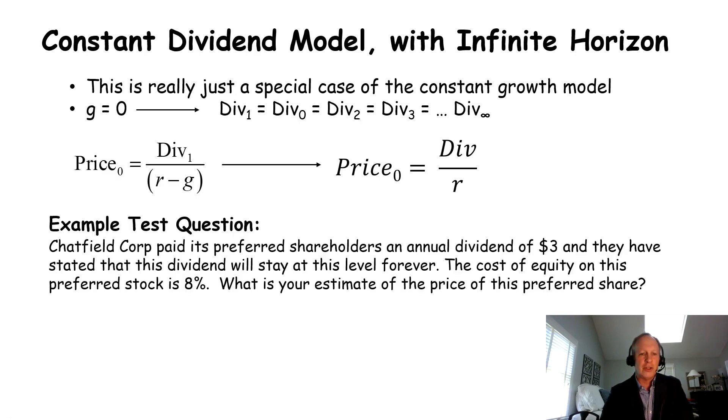Now, so here's the question. Chatfield Corp. paid its preferred shareholders an annual dividend of $3, and they have stated that this dividend will stay at this level forever. It's never going to change. It's always going to be $3. The cost of equity on the preferred stock is 8%. What is your estimate of the price of this preferred share? So it's going to be $3 divided by 8%. That's it. You get this question on a test, you are excited because that is a layup. That's a bunny. That's an easy question. You're going to crush it.